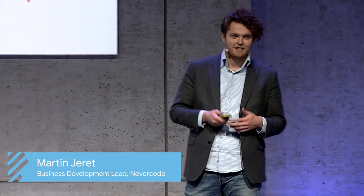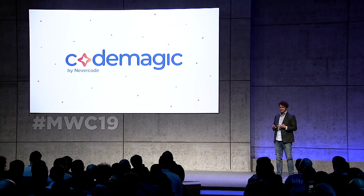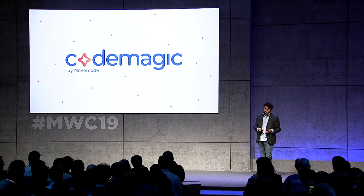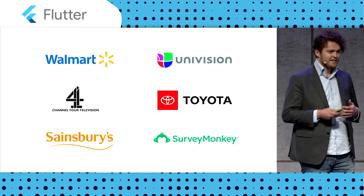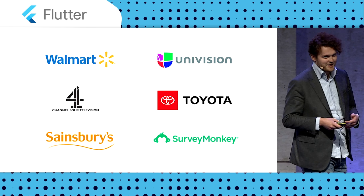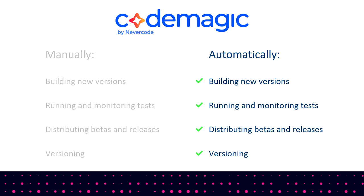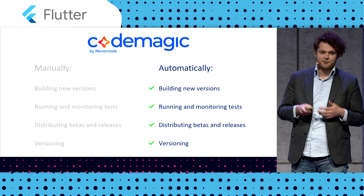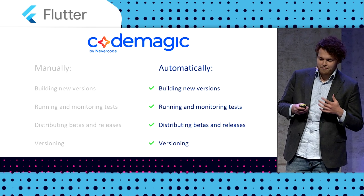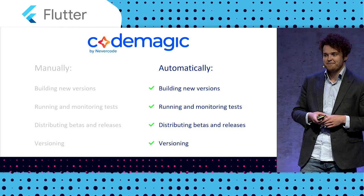At NeverCode, we believe that businesses should be able to test and deliver mobile apps seamlessly throughout the development process. You should be able to focus on making a great product and have the testing and delivery process automated. Before CodeMagic, we'd been building our automated testing and delivery product with mobile developers at companies like Toyota, Sainsbury's, and Walmart. We made a dedicated service specifically designed for Flutter — that service is CodeMagic. We automate all the manual work to get your app to users. CodeMagic is a free service, and developers can focus on building a great product and making users happy.